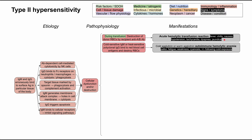Next is autoimmune hemolytic anemia, which can be of the cold agglutinin or warm agglutinin variety. In this disease, you have cold-sensitive antibodies, usually IgM, or heat-sensitive antibodies, usually polyclonal IgGs, and they bind directly to red blood cell antigens and destroy red blood cells. The patient might present with pallor, fatigue, weakness, cyanosis, and in the cold agglutinin disease, it might follow cold exposure. These are standard anemia symptoms, but it's an autoimmune hemolytic anemia rather than a transfusion reaction.